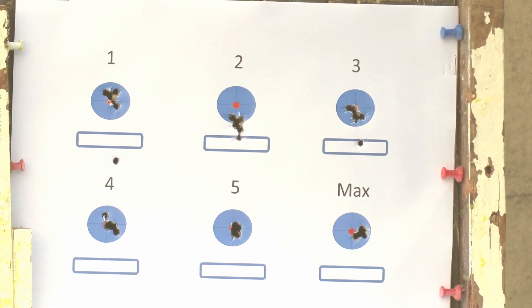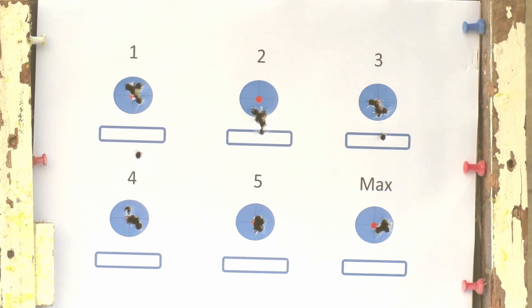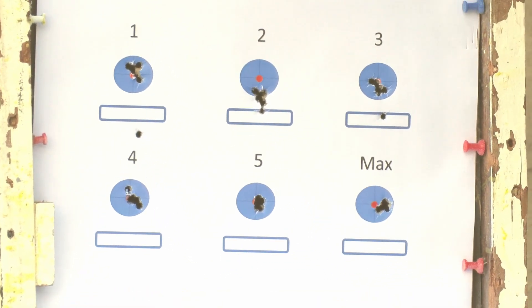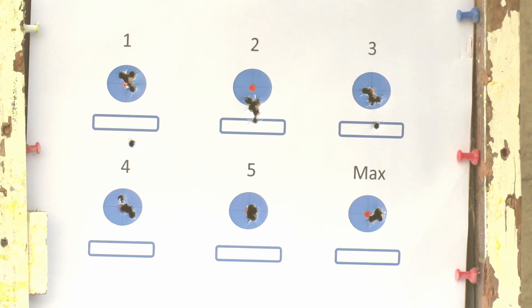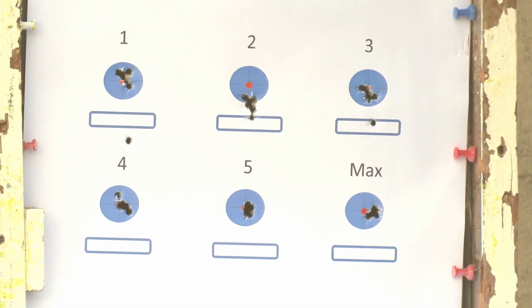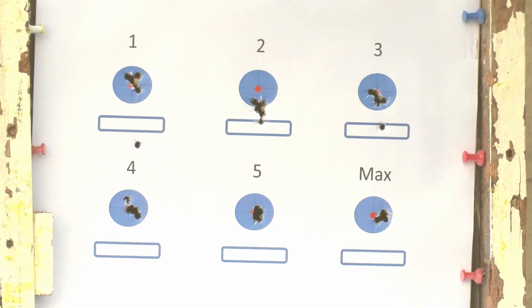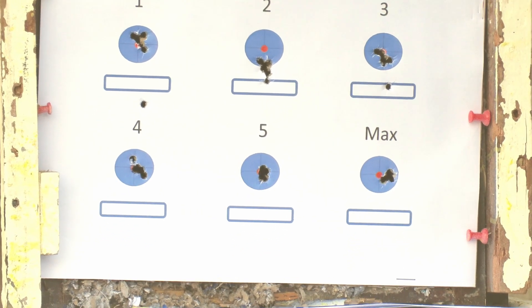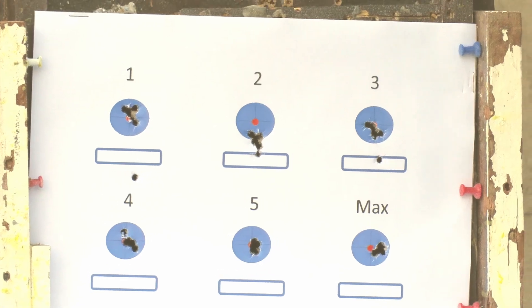And the reasoning for that is the weight of the FX radar on the barrel that actually pulls it down. So you can't zero your gun with the radar on. You have to check your speed first, remove the radar, and only then zero your gun.